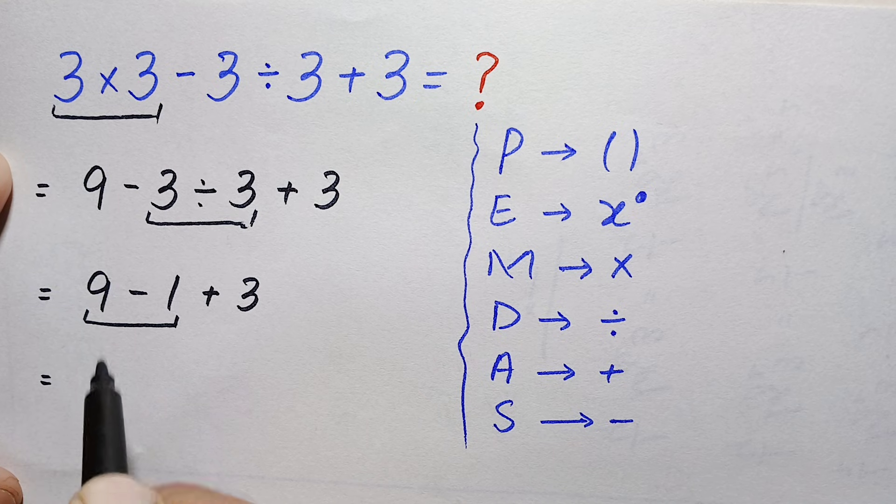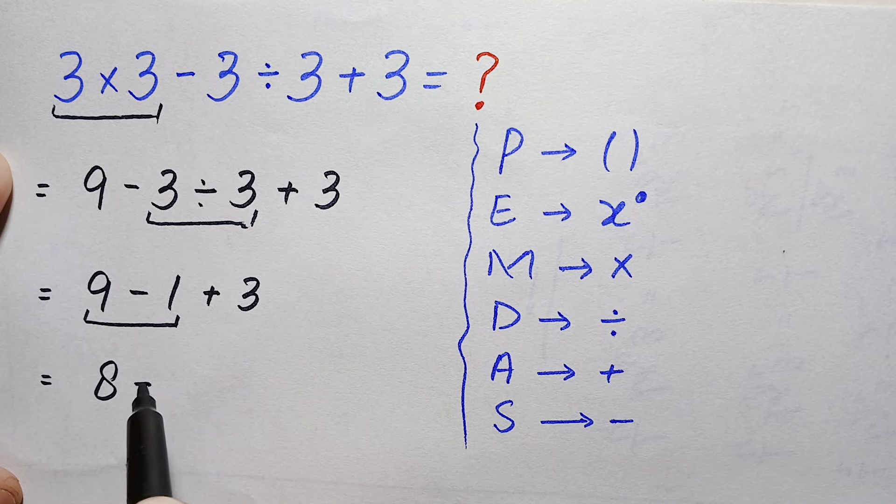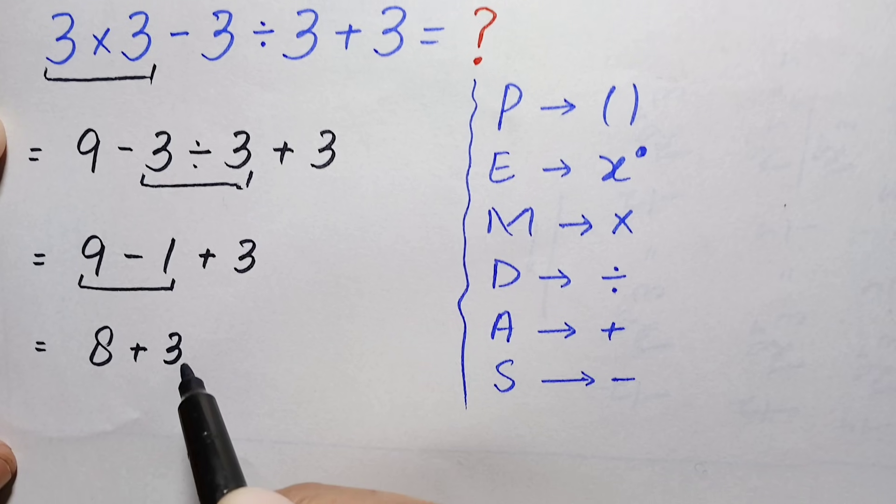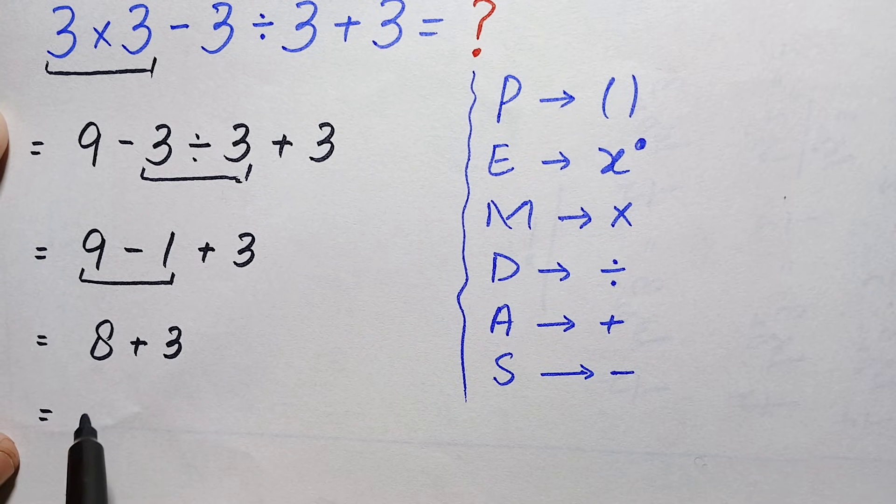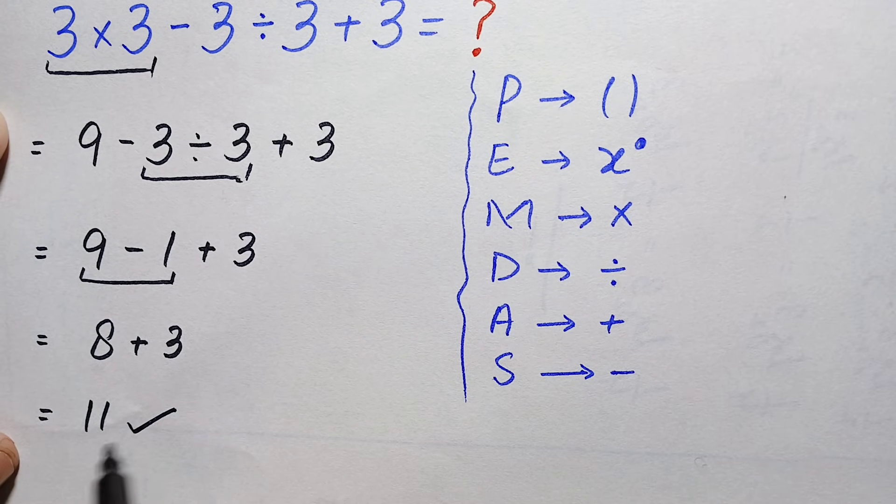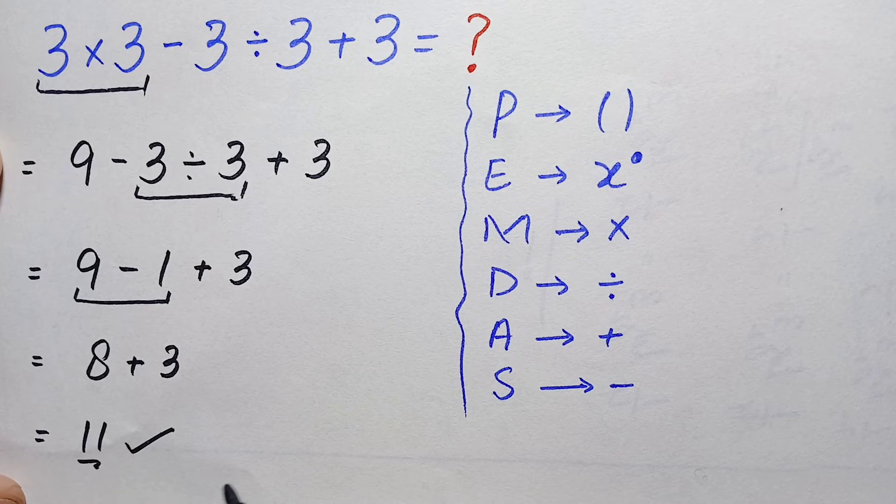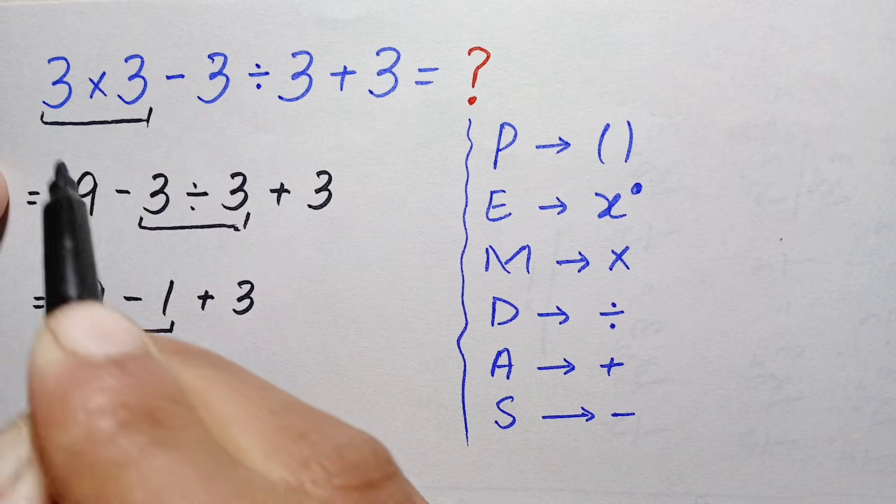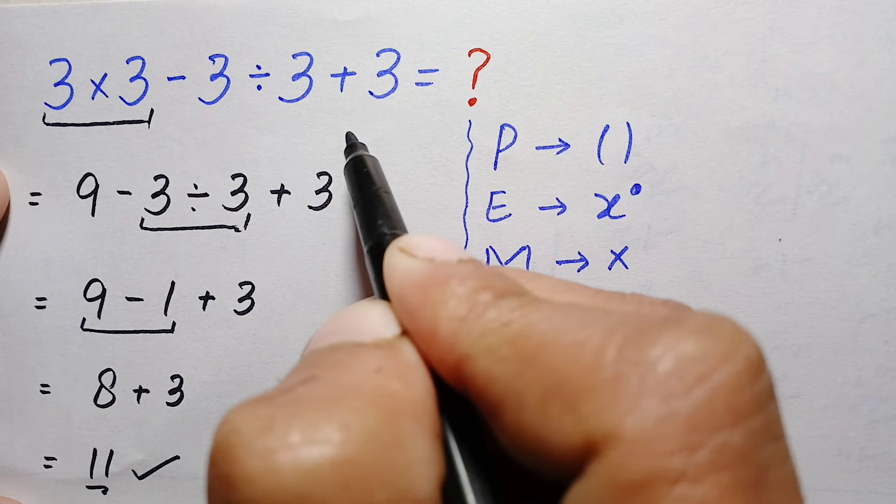So here, 9-1 is simply 8. This is 8+3. Finally, 8+3 is simply 11, and that is our final answer. The correct value and correct answer of this interesting math problem is 11.